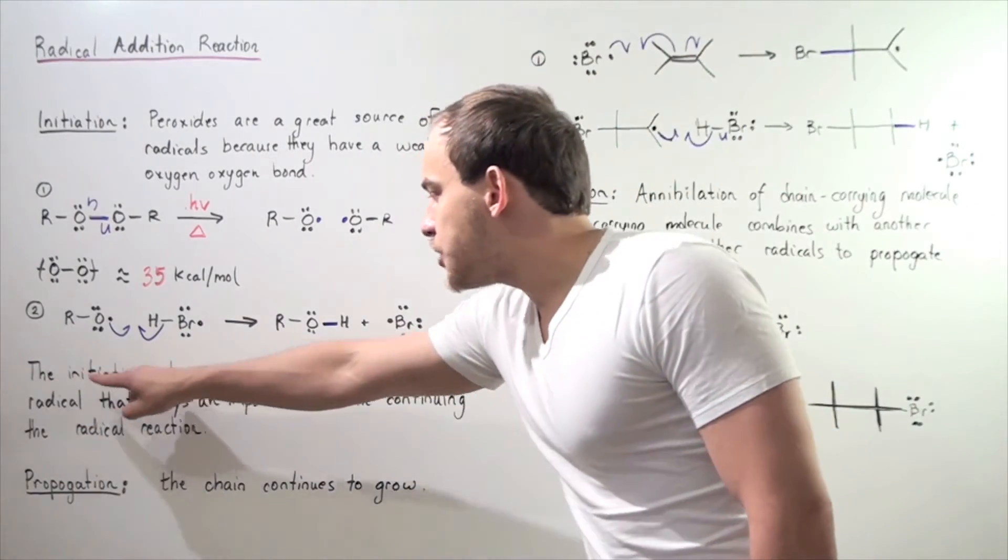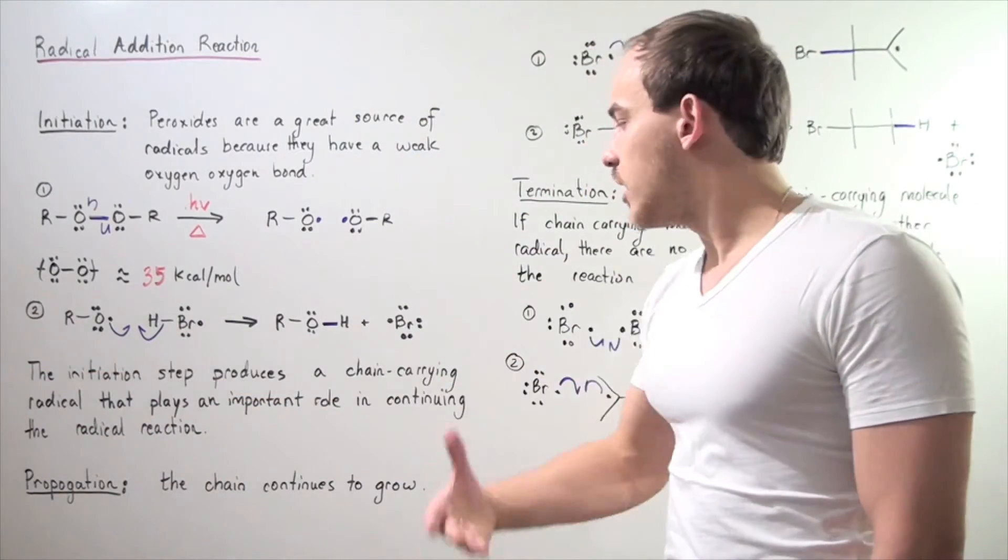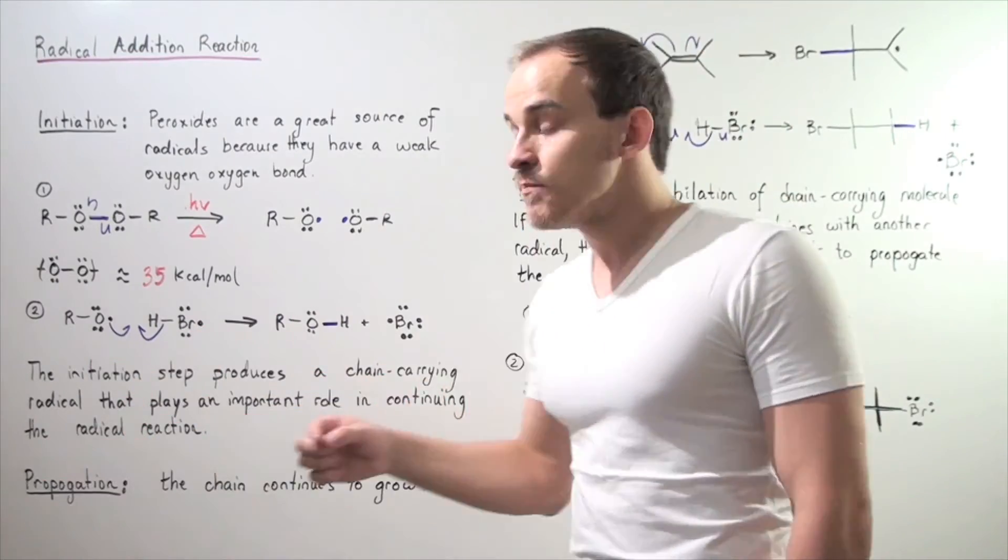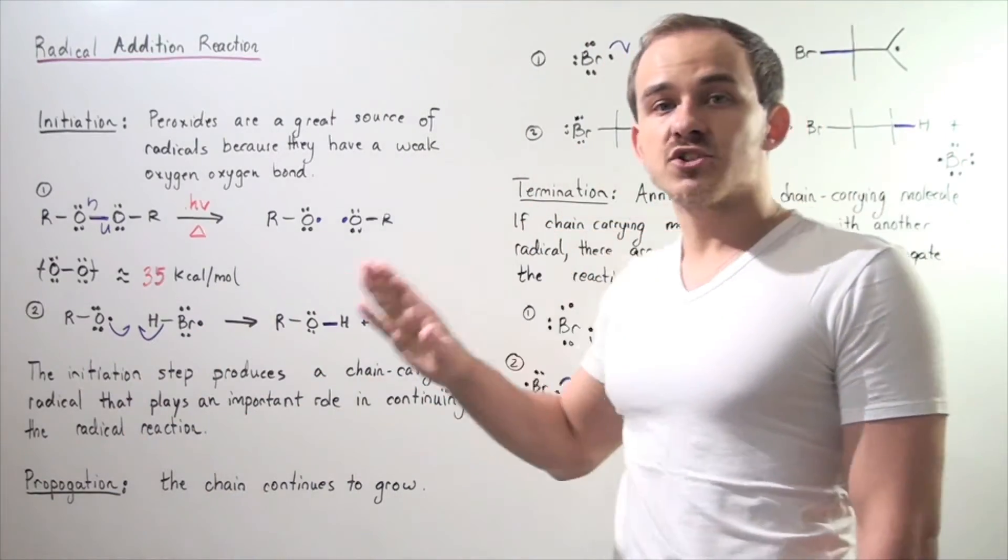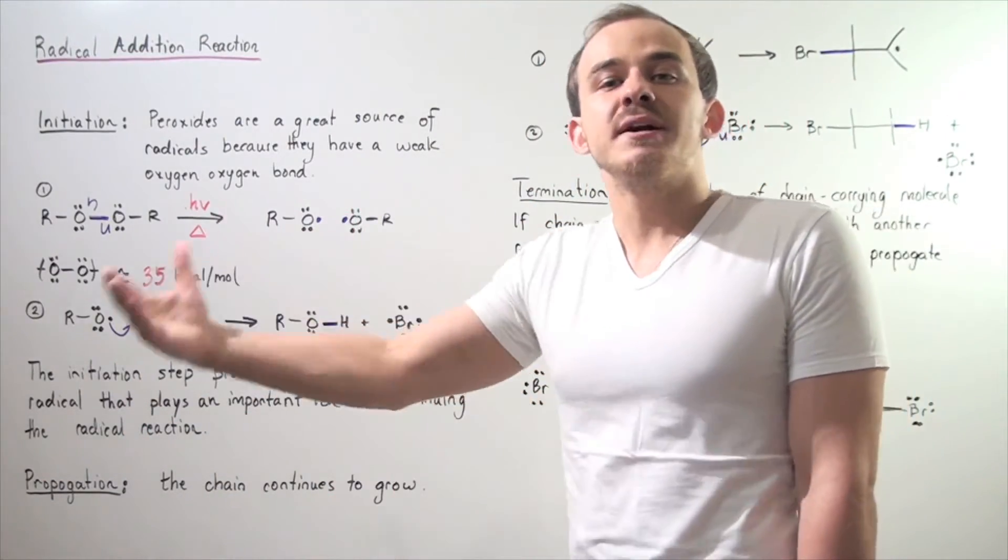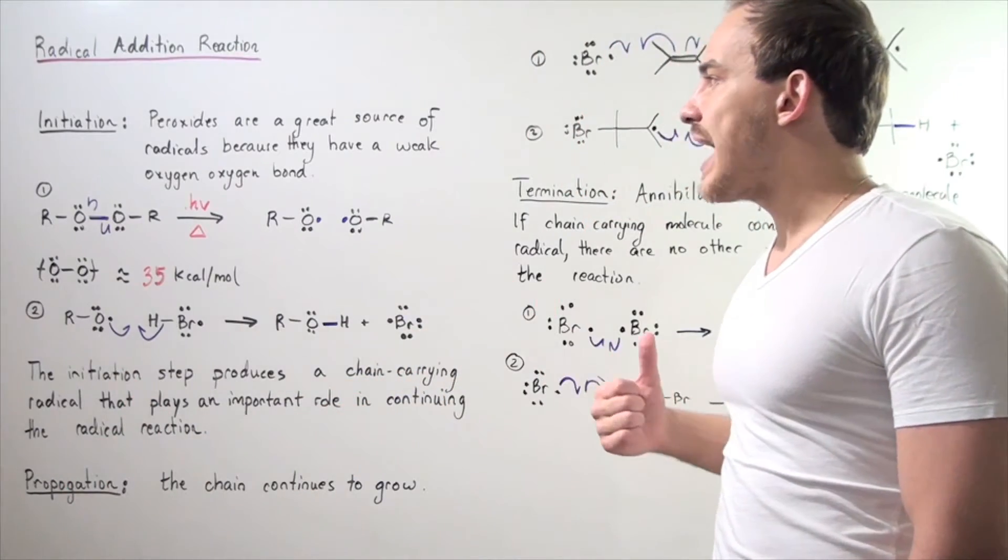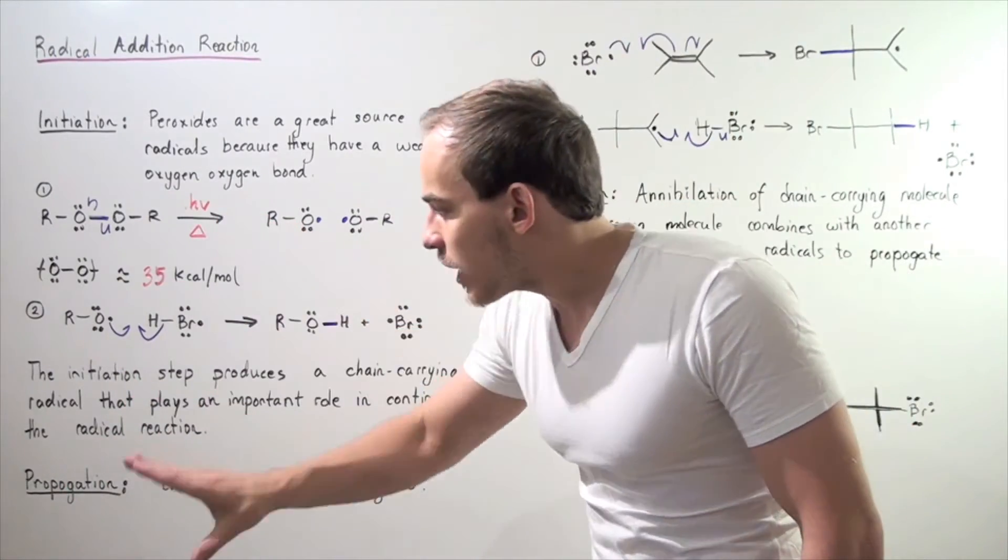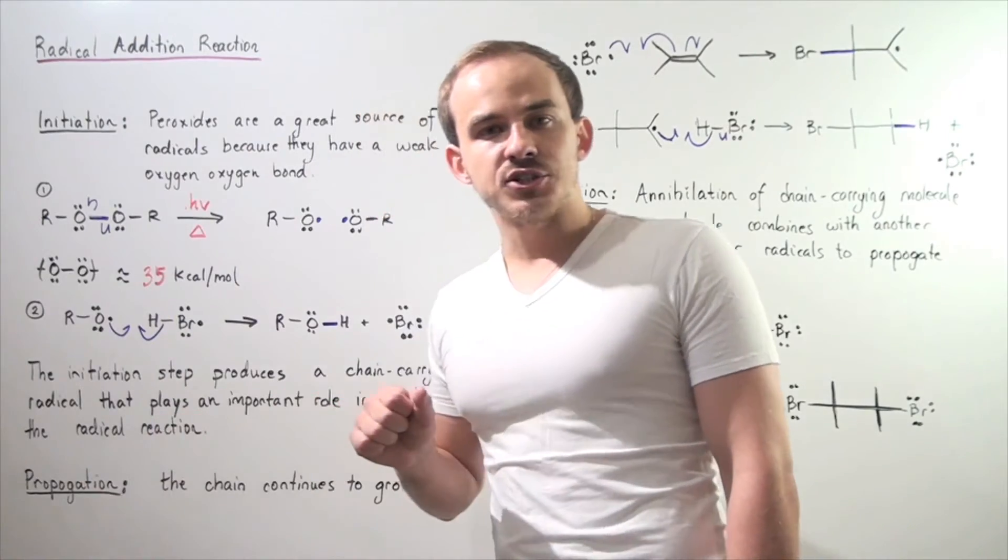Once again, the initiation step produces a chain-carrying radical. This radical plays a role in propagating our radical reaction. Now we jump directly to the propagation step.